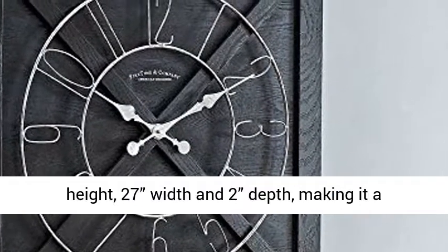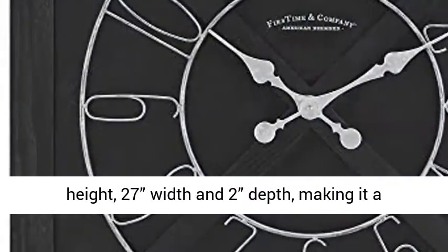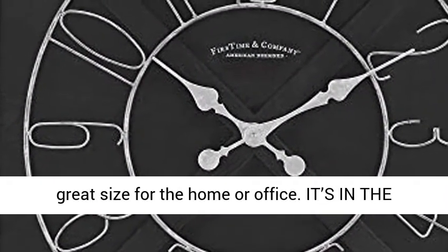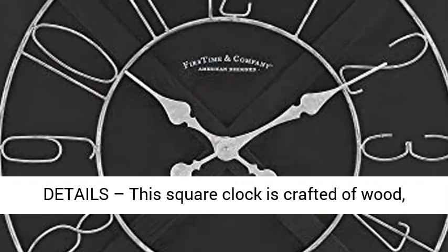Oversize - the FirsTime and Company Blacked Farmstead Barn Door Wall Clock has a 29 inch height, 27 inch width, and 2 inch depth, making it a great size for the home or office.